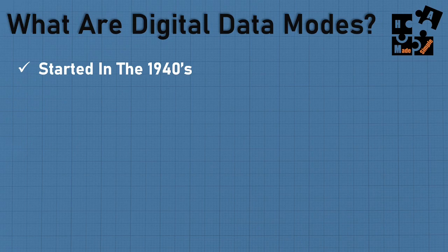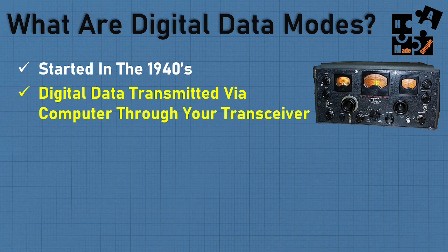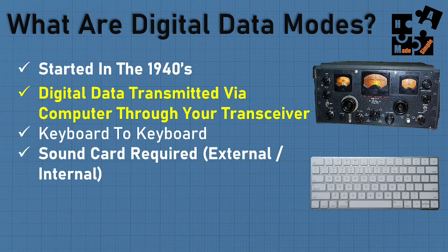What surprised me is that digital was actually being used back in the 1940s — it's been around quite a while. Essentially, you're taking digital data transmitted via your computer, through your transceiver, through your antenna, over to someone else's antenna, through their transceiver to their computer. This is known as keyboard-to-keyboard communication — from my keyboard to someone else's keyboard, via HF ham radio devices. A sound card is required, either internally or externally, and it is a must in order to set this up.